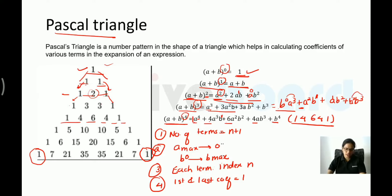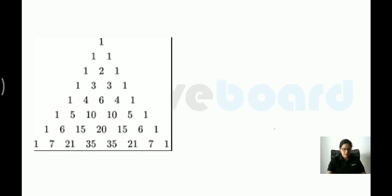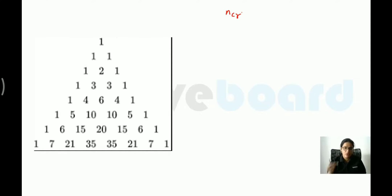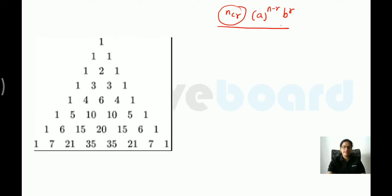The coefficients are calculated using nCr. Each term in the binomial expansion is represented as nCr · a^(n−r) · b^r. So the general term T(r+1) = nCr · a^(n−r) · b^r. The coefficient uses nCr, where r starts at 0 for the first term and increases by 1 for each subsequent term.